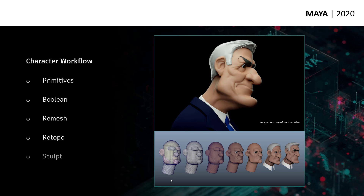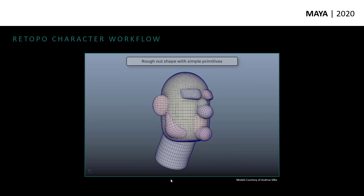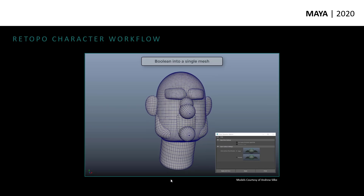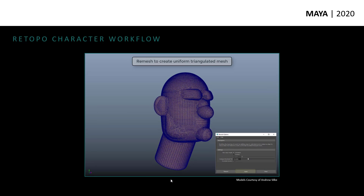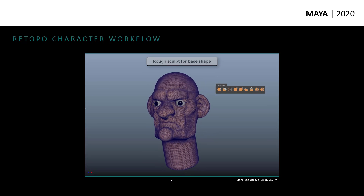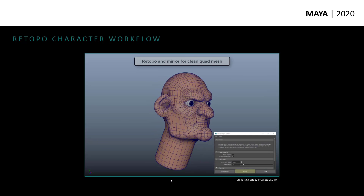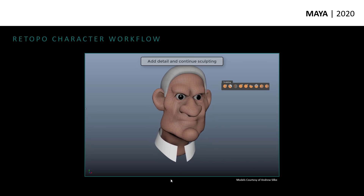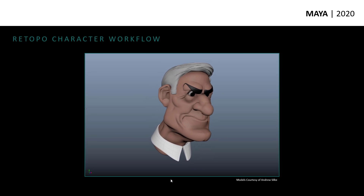Another workflow this opens up is similar but with organic shapes — whether for creatures or characters. This is an example created by one of our beta users, Andrew Silk, who provided us this example of a workflow using these Boolean features. The idea is that you take a series of primitive objects roughed out to create the base form, Boolean those into a simple shape, then run Remesh to create a nice uniform topology. Then do a base sculpt using standard sculpting tools to refine the shape, and ultimately run Retopology on that to create a nice clean edge flow.